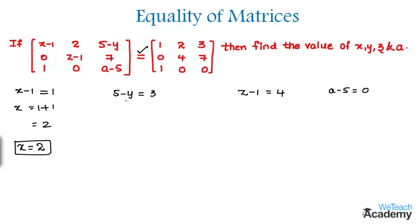And here in order to find the value of y, let us transfer 5 to the other side. We get minus y is equal to 3 minus 5. So that implies we get minus y is equal to minus 2. So we can say that the value of y is equal to 2.